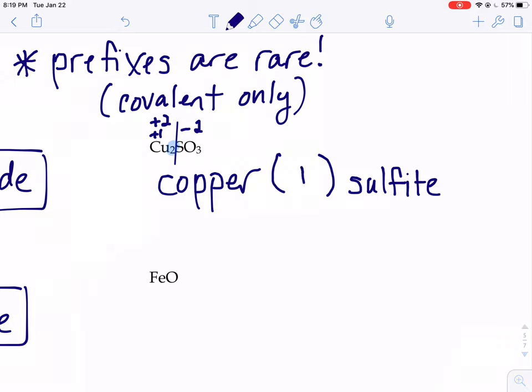So I'm going to put a Roman numeral 1 in the parentheses here because this Roman numeral tells you the charge on each copper, not the total charge, but the charge on each one. Each of those copper ions must be a positive one.